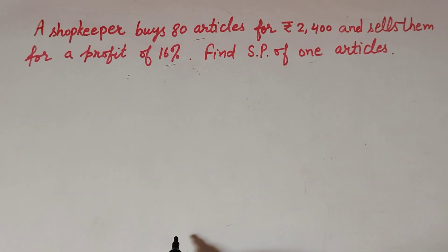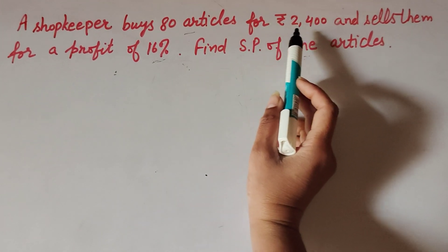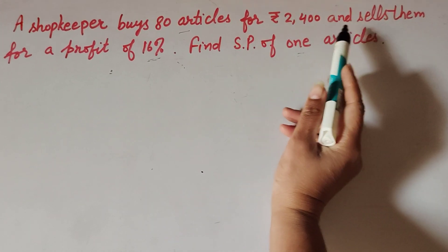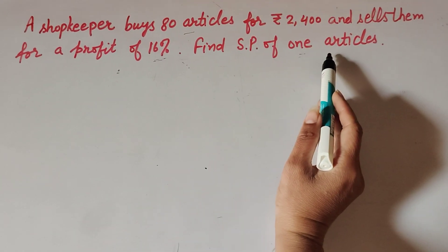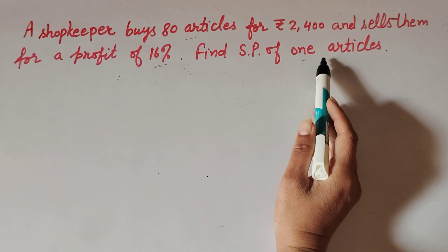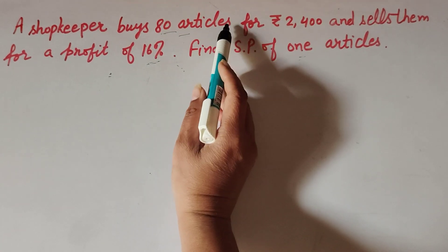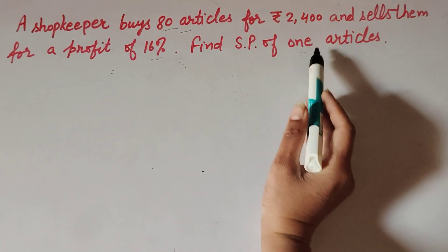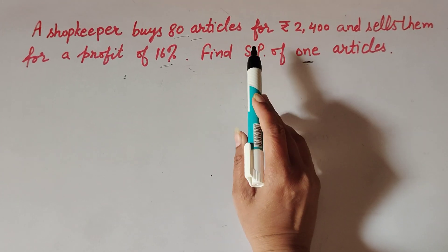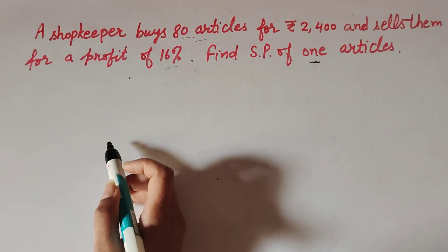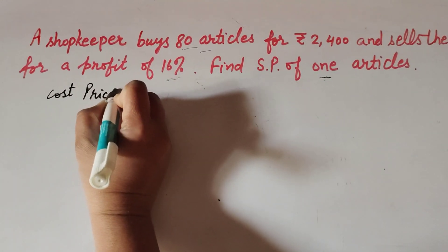Hello friends, welcome to my channel. In this video we discuss: a shopkeeper buys 80 articles for rupees 2400 and sells them for a profit of 16 percent. Find the selling price of one article. The given thing is the cost price of 80 articles is rupees 2400, and we need to find the selling price of one article. To find that, first we find the selling price of 80 articles.